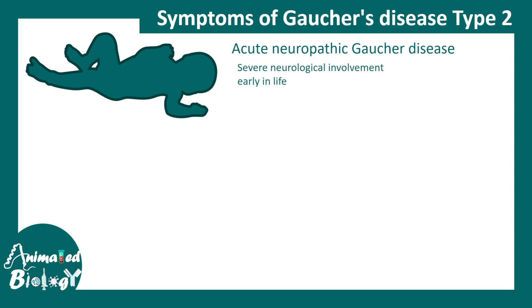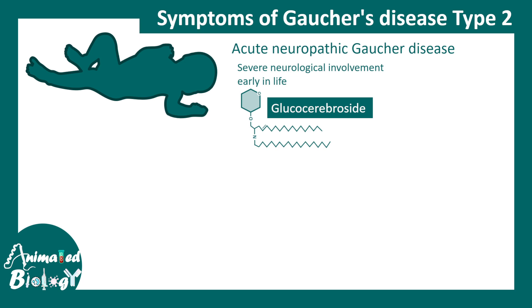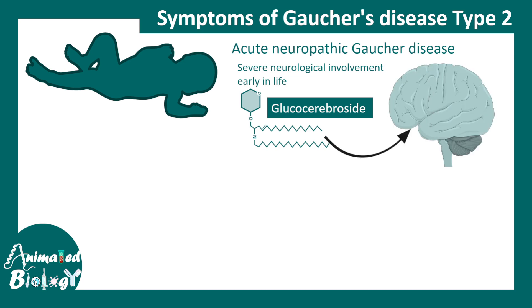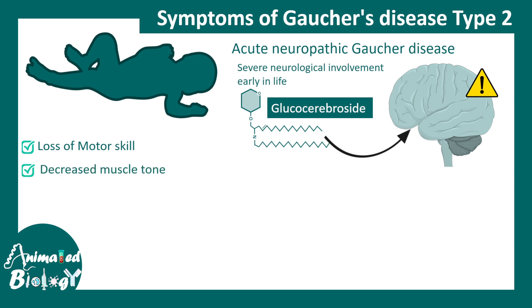Type 2 generally occurs in the early stages of life. Glucocerebroside can be toxic to the brain and leads to loss of motor skills, decreased muscle tone, and muscle spasms.